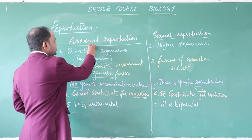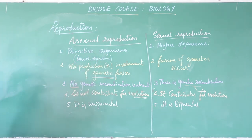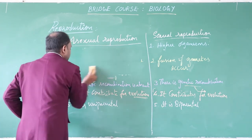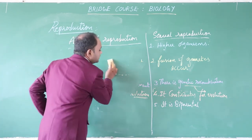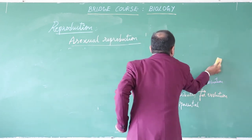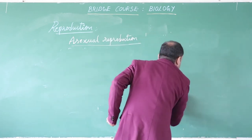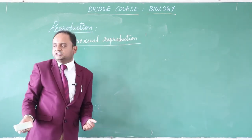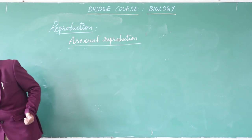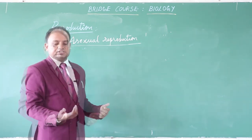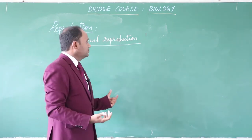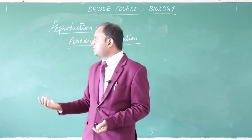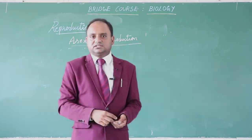Let me discuss a few types of asexual reproduction. The first type is binary fission, the second type is budding, the third type is zoospore formation, and the next is fragmentation — as in Spirogyra, which you have already studied in grade 10. In the next class we will deal in detail with the types of asexual reproduction.